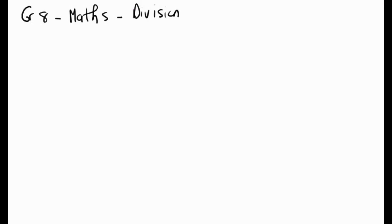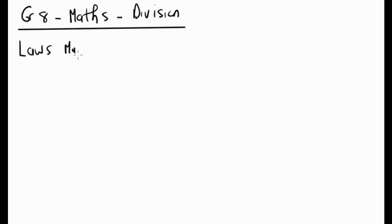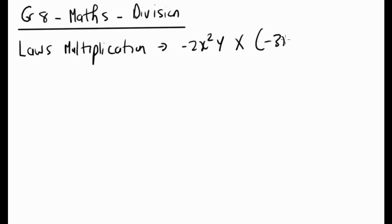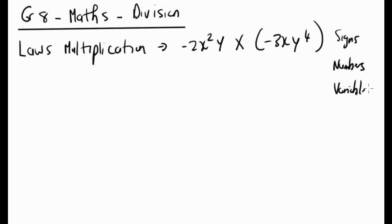Welcome Grade 8s, we're going to go through division today — the laws and some examples, then you'll do some sums. As a reminder, with multiplication we add our exponents. For example, negative 2x squared y multiplied by negative 3xy to the power 4: we look at signs, then numbers, then variables. Negative times negative is positive, 2 times 3 is 6, x to the power 2 plus 1 is 3, and y to the power 1 plus 4 is 5.